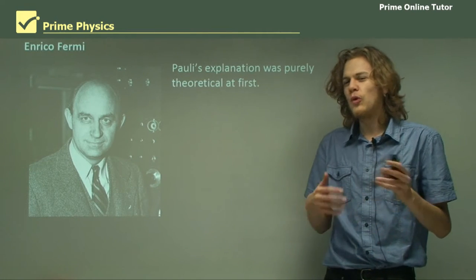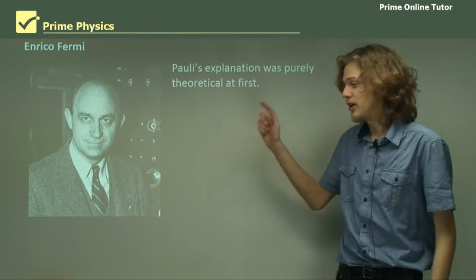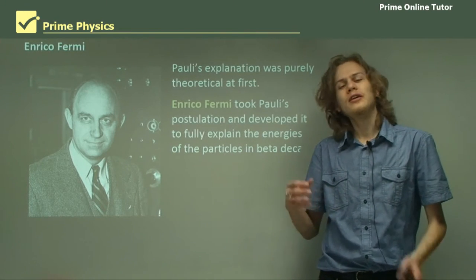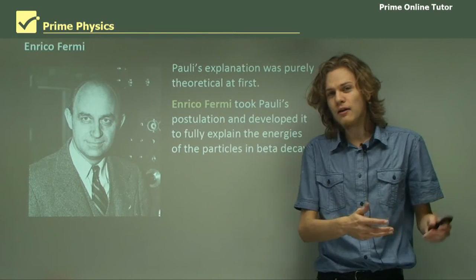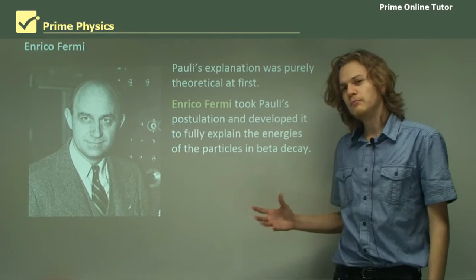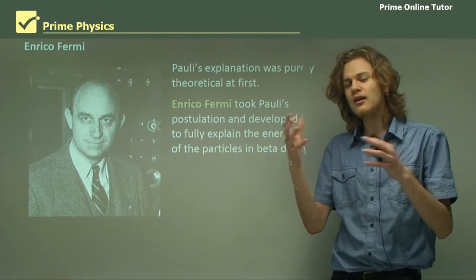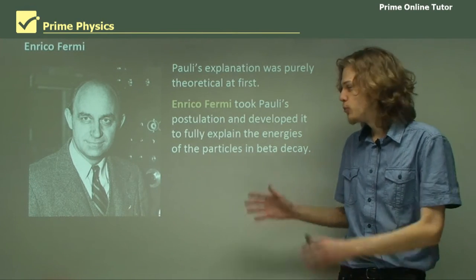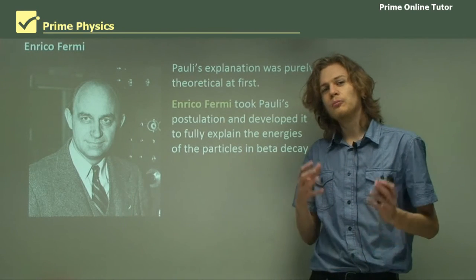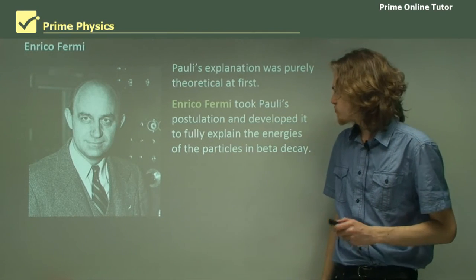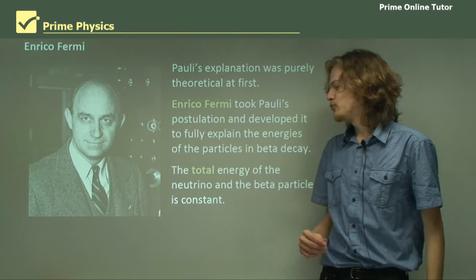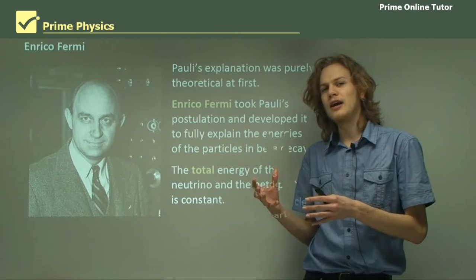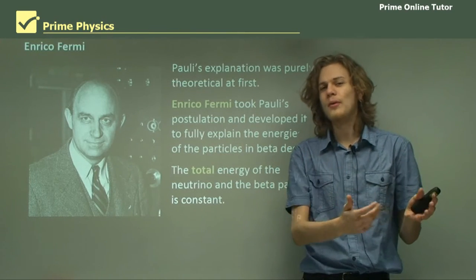No one was really very satisfied with that because how could you test it? No one really knew whether the maths would work either until this guy came along. Enrico Fermi took this postulation of the neutrino and figured out exactly how all the maths would behave, and it turns out that it managed to precisely explain the energy curve of beta decay. The total energy of the neutrino and the beta particle is about constant.